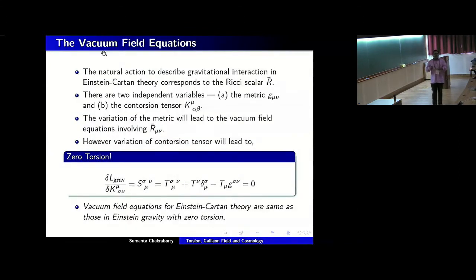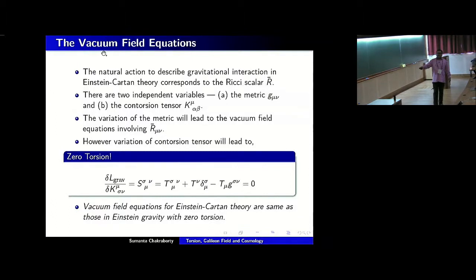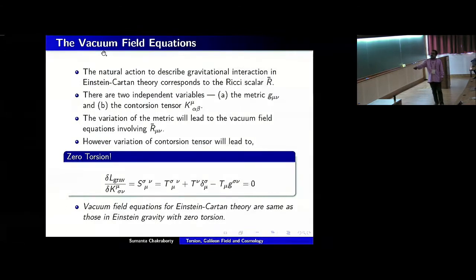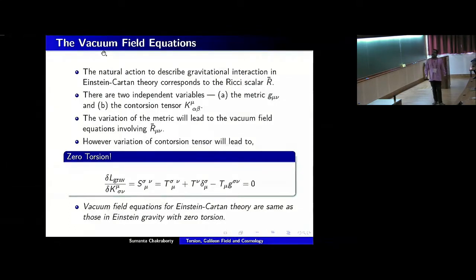If you want to recover Einstein's equations, in vacuum you vary the action — which involves torsion — with respect to two independent variables: the metric and the contortion tensor K. Variation with respect to the metric leads to vacuum field equations involving torsion, while variation with respect to the contortion leads to an equation with no source term on the right-hand side. Taking the trace of this equation — where T^μ corresponds to the trace of the torsion tensor — you find that the trace part vanishes. Substituting this back, you get that torsion itself must vanish. So in vacuum, the field equations of Einstein-Cartan theory are the same as those of Einstein gravity with zero torsion. Therefore, matter is essential.